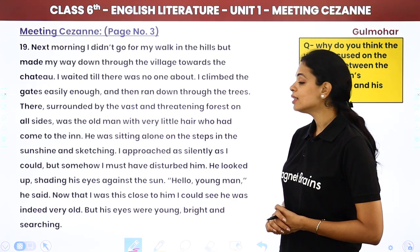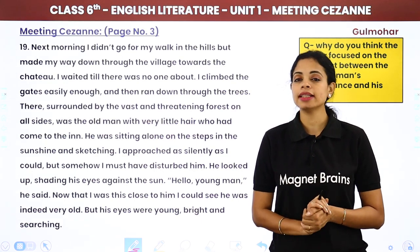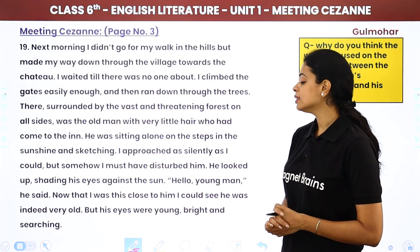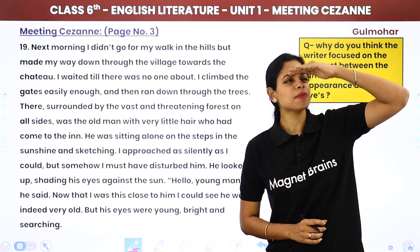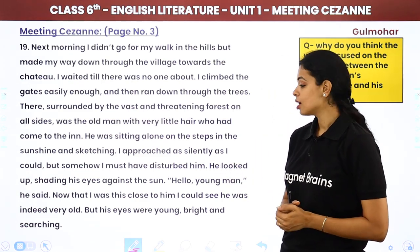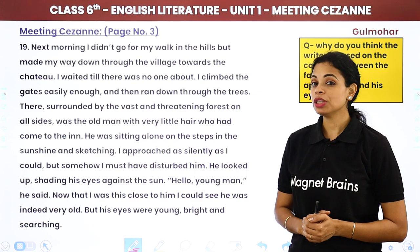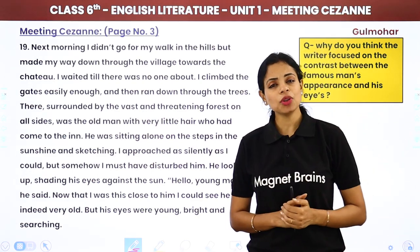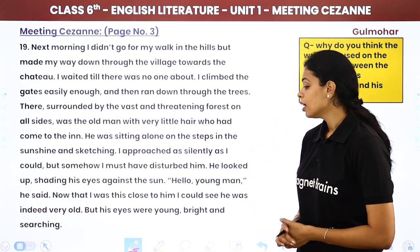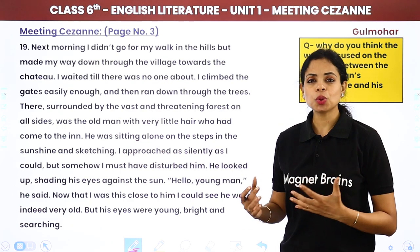Yannick approached as silently as he could, but somehow the man sensed him and looked up, shading his eyes against the sun. He said, 'Hello young man.' Now that Yannick was this close, he could see the man was indeed very old — but his eyes were young, bright, and searching.